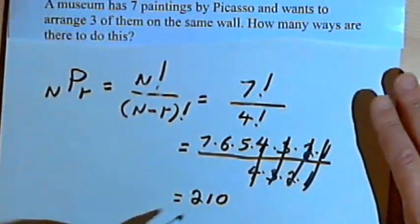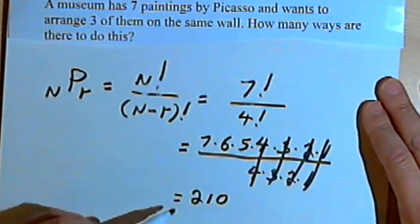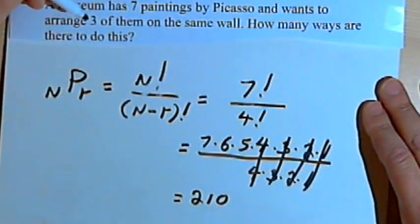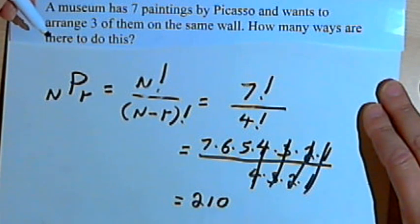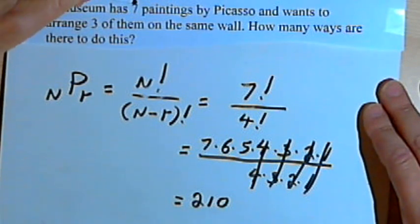So that means there are going to be 210 different three-painting permutations or three-painting arrangements that I can make from this total of 7 paintings.